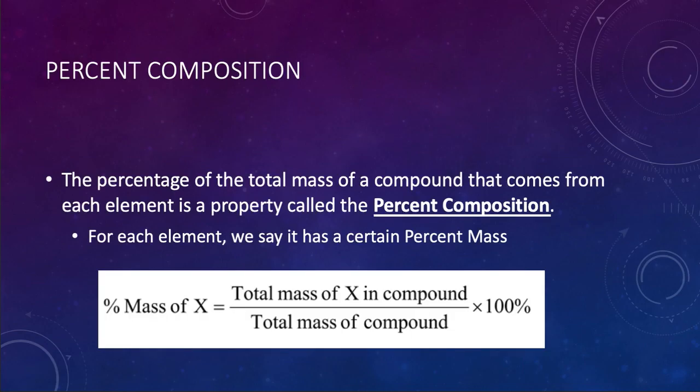The last topic for today is percent composition. If you recall, Dalton was the first person to talk about how there is a certain ratio of the masses of the elements in a compound. And if you turn that into percentages, then you get what we call the percent composition. This is a property of compounds. Each compound has its own percent composition, essentially.